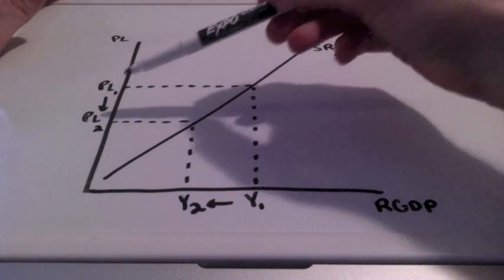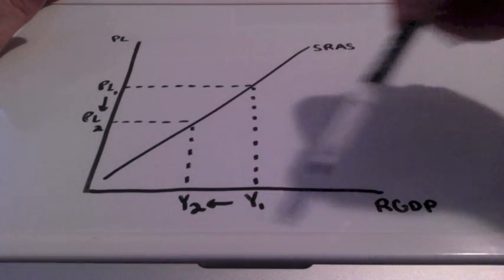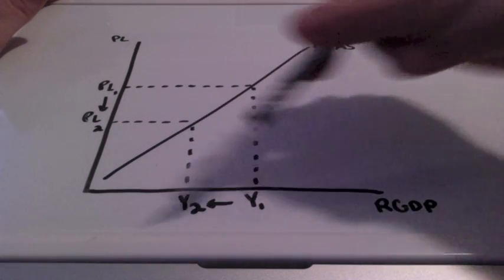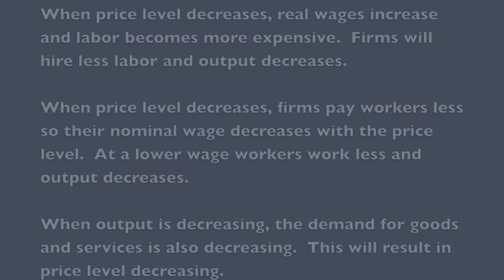Our price levels are going down, our expenditures are going down, meaning that our GDP is also going to be decreasing.